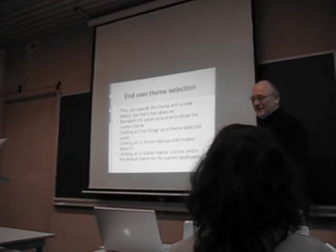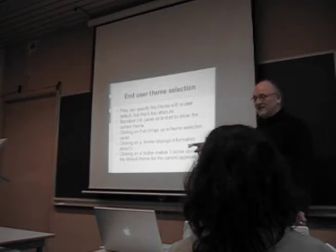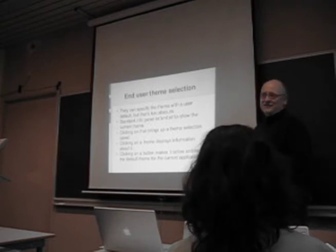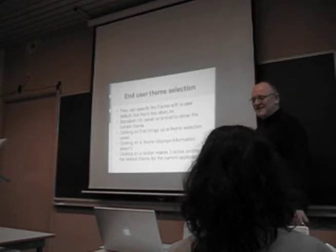So all we do is extend that standard mechanism so that it shows the current theme at the bottom of the list with all the other information about the application. Clicking on the name of that theme brings up the theme panel, which gives you the icons of all the themes on the left, and lets you select an individual theme. Once you've selected a theme, it displays the information about it, who the author was, when it was written, any other information the theme author wanted to put in there, and also, obviously, changes the way your application looks. There's also a button on that panel that lets you make this selected theme be the default for your application.